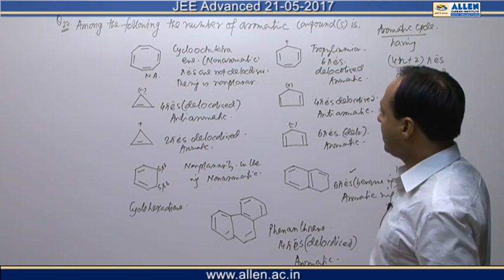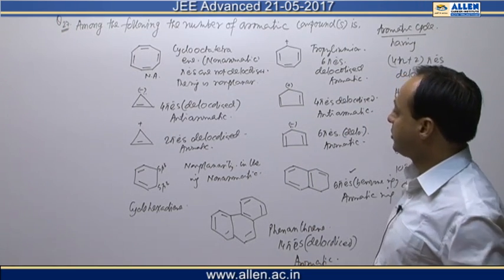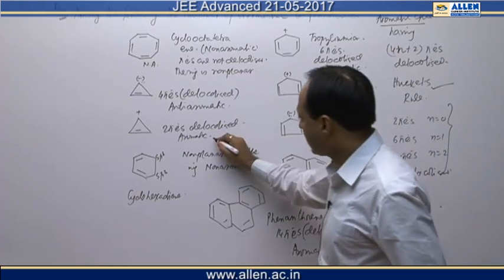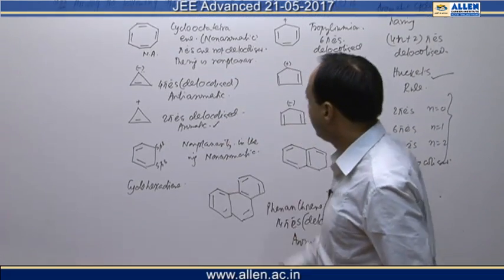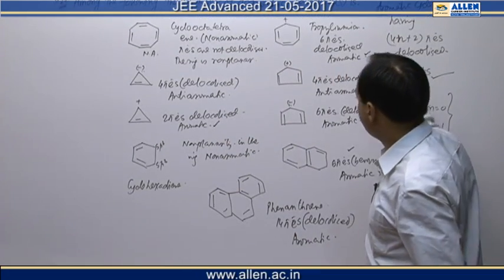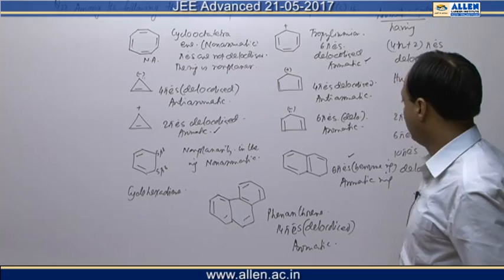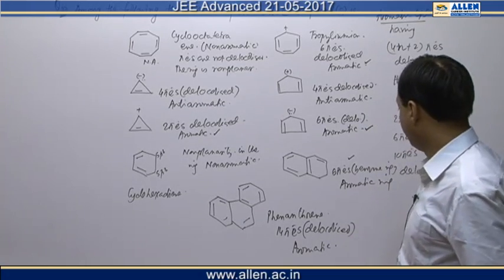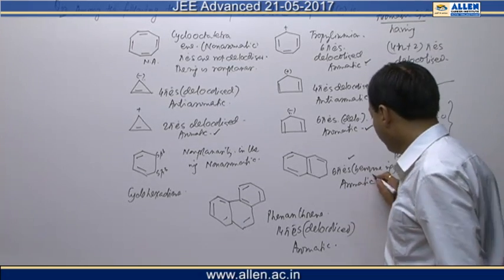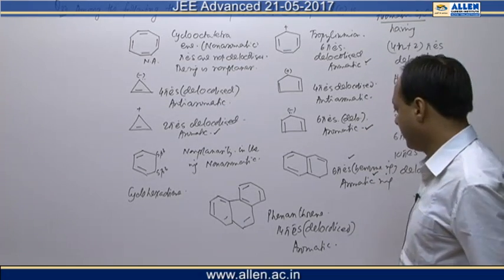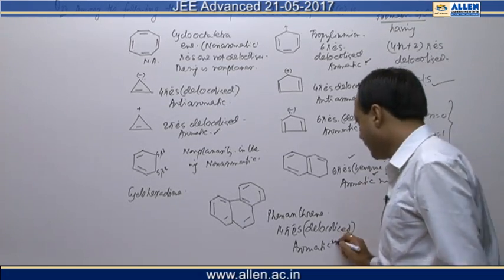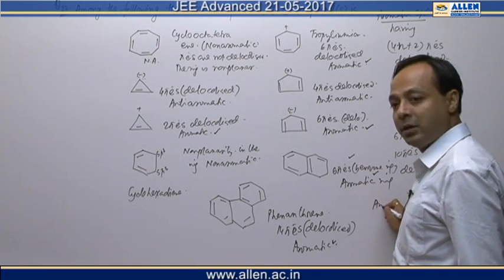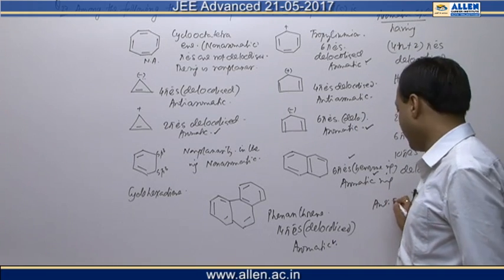So, counting the total aromatic compounds: the 1st is aromatic, the 2nd is aromatic, the 3rd is aromatic, the 4th is aromatic, the 5th is aromatic. The answer is 5.